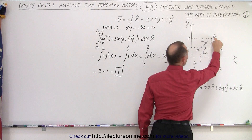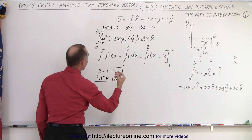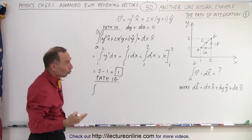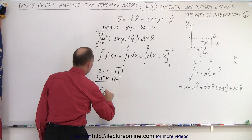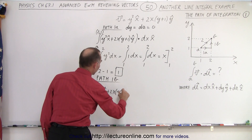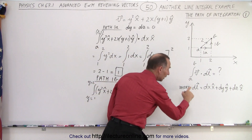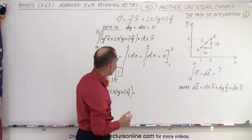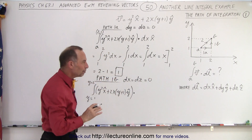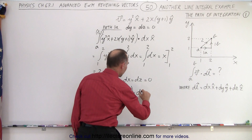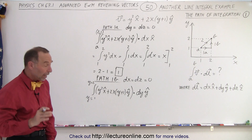Now we travel from point (2,1) to B along the vertical line — that's path 1b. We have the integral from y = 1 to y = 2 of our vector, which is y² in the x-direction plus (2xy + 1) in the y-direction, dot product with dl. Along path 1b, the x and z values don't change, so dx = dz = 0, meaning only the dy component survives: dy times y-hat.